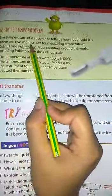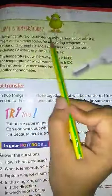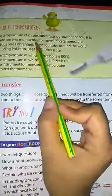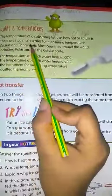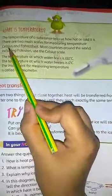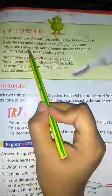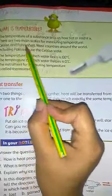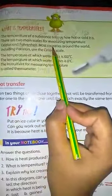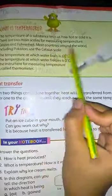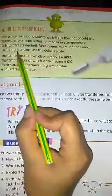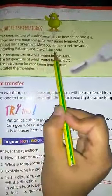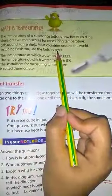There are two main scales for measuring temperature: Celsius and Fahrenheit. Most countries around the world, including Pakistan, use the Celsius scale.